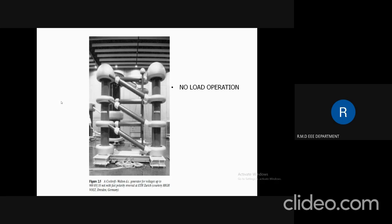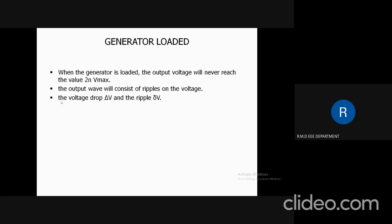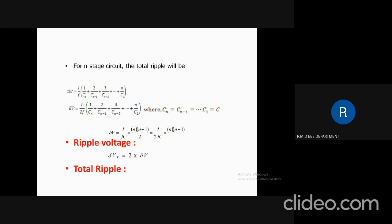This is the practical view of the Cockroft voltage DC generator circuit. Under loaded condition, when the generator is loaded, the output voltage will never reach 2N × Vmax. The output will consist of ripples, and the voltage drop delta V and the ripple voltage are represented as delta V. For an n-stage circuit, the total ripple is represented as: delta V = (I / FC) × N(N+1)/2, which equals I / (2FC) × N(N+1).